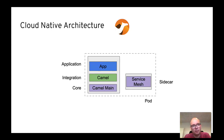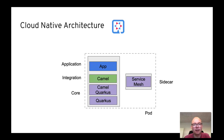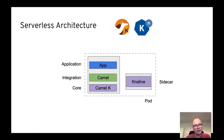If you're building integration applications for cloud native, you don't need Spring Boot — you can just use Camel. We have something called CamelMain for that. There's also the great project Quarkus, which is a really awesome product I encourage people to look at, and CamelMain works great with Quarkus as well. And for serverless architectures we have a very exciting product called Camel K.